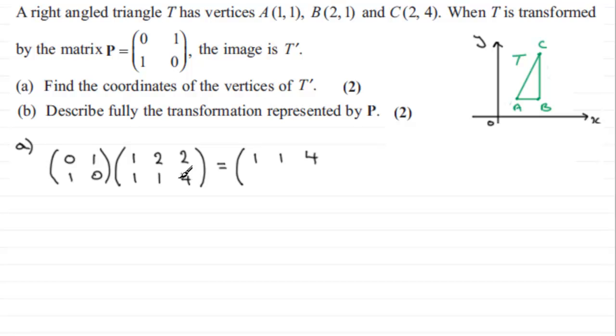And when we go to do (1,0) times each of these columns here, we'll do 1 times the top number plus 0 times the bottom number. Well, all the bottom numbers will end up being 0, so you just get 1 times each of the top numbers, returning 1, 2, and 2. Okay, so this is our image matrix for T prime.